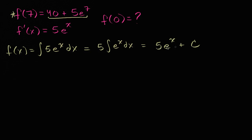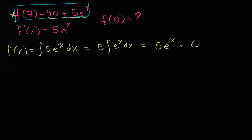You can verify: take the derivative of 5e to the x plus c. The derivative of 5e to the x is 5e to the x, so that works out, and the derivative of c is zero, so you wouldn't see it. Now let's use this information to figure out what c is, so that we know exactly what f of x is, and then we can evaluate f of zero.